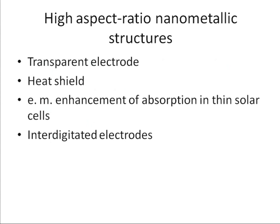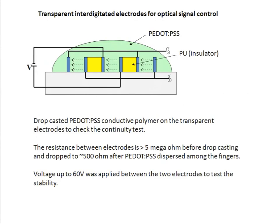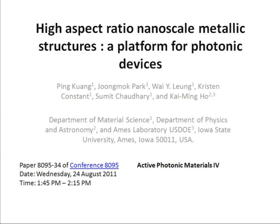Once you make these structures, you can play different games with it. We have shown that it can be used as a heat shield — preliminary tests show it can shield infrared radiation. We have also done theoretical work showing you can have even more than 100% transmission, in that you can have electromagnetic enhancement of absorption in thin solar cells, which might be quite relevant for organic solar cells. Finally, you have two sets of ribbons — you can connect one to positive and the other to negative, and put big voltages across polymers placed in between.